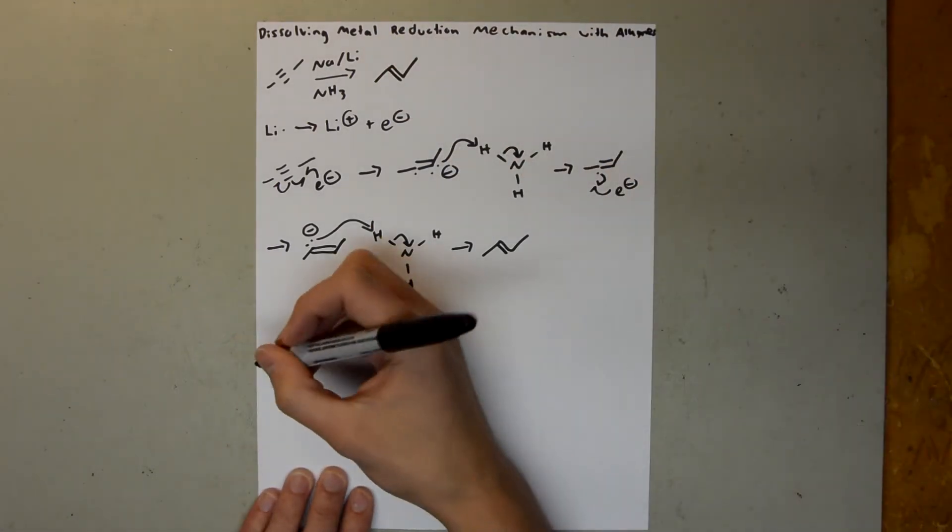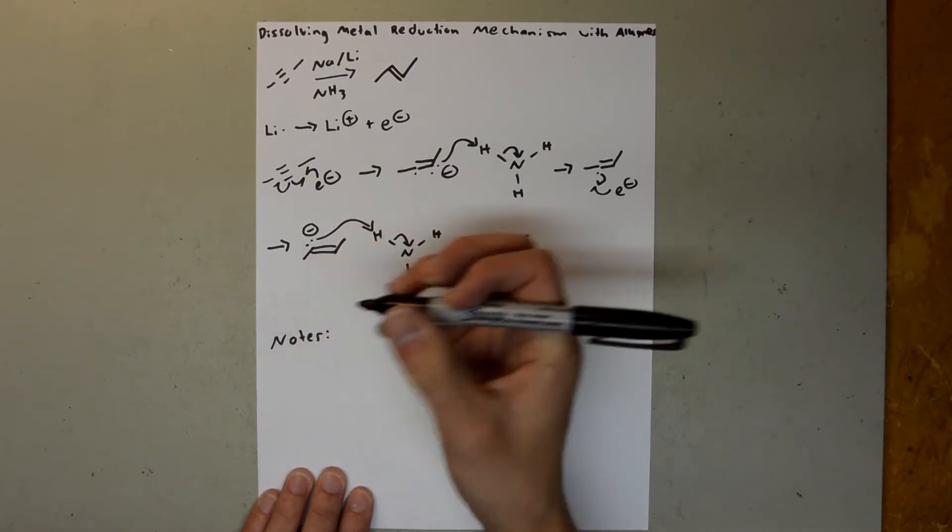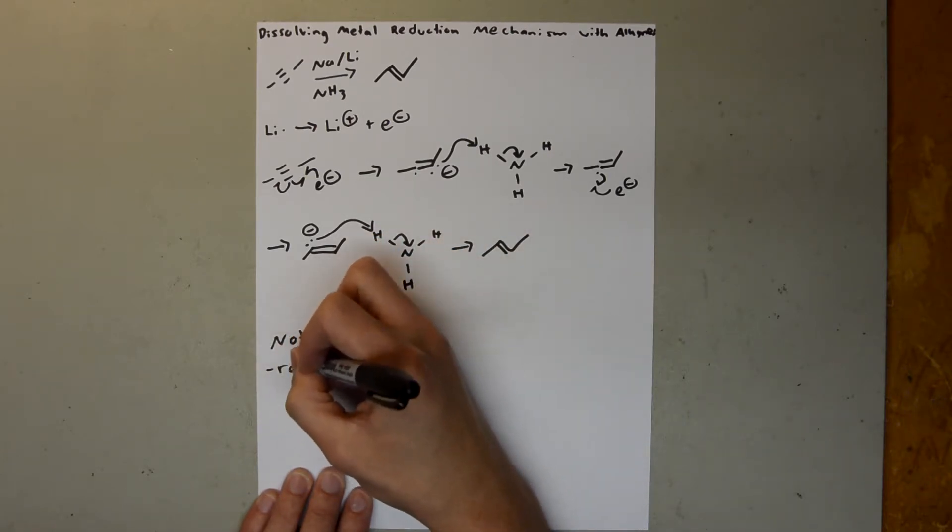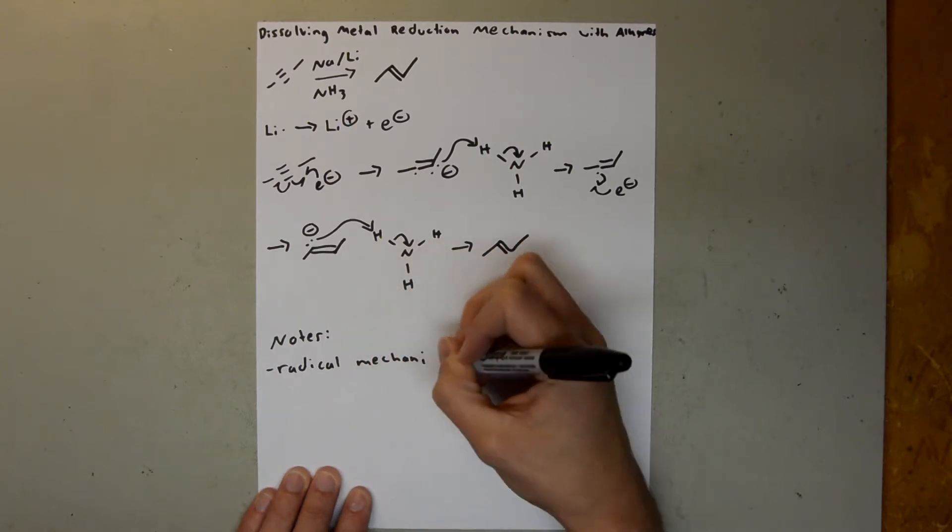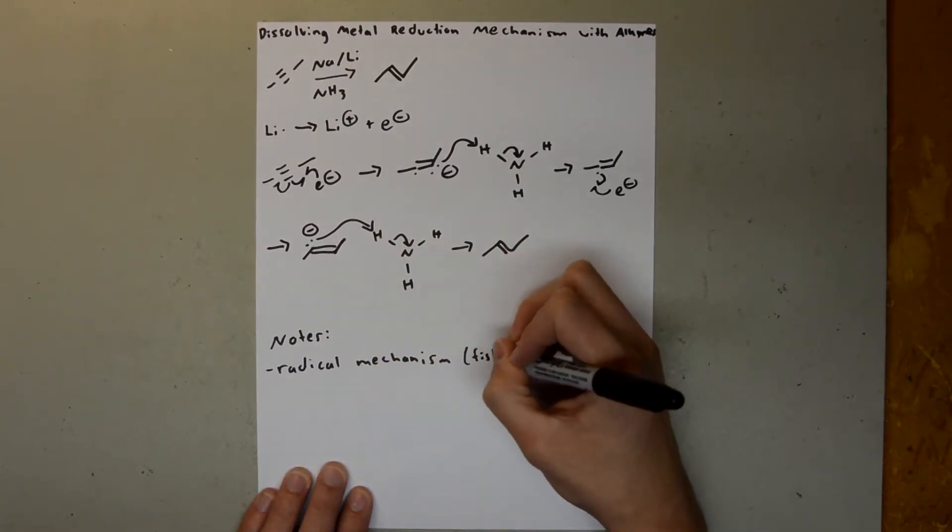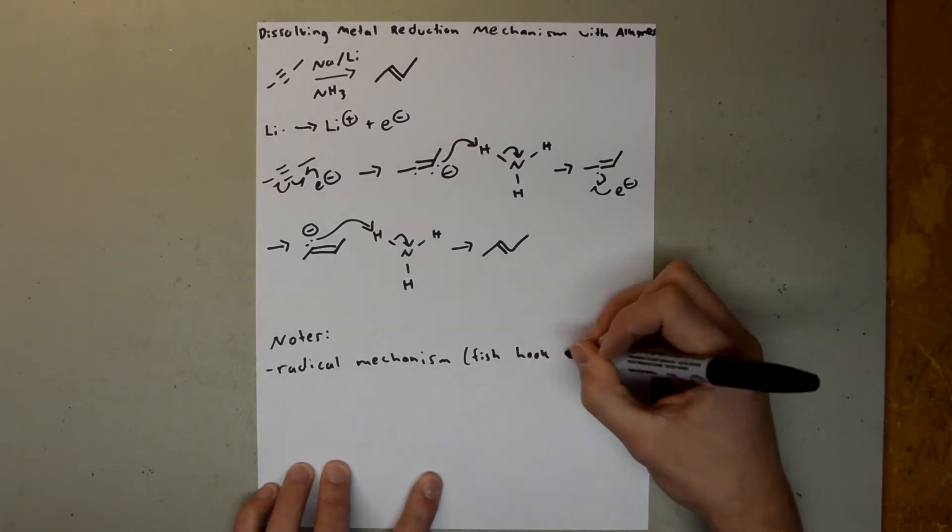So a couple notes about this mechanism. Like I said, it's a radical mechanism. So again, you want to use fishhook arrows.